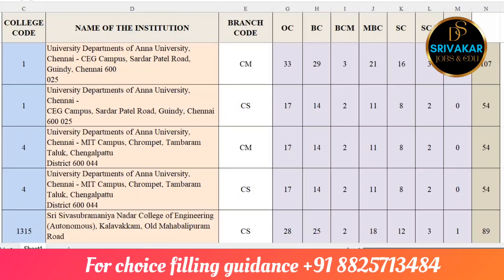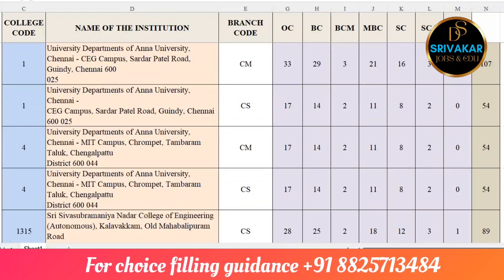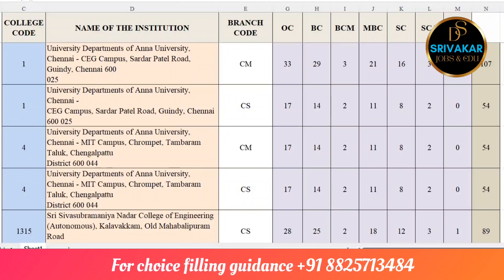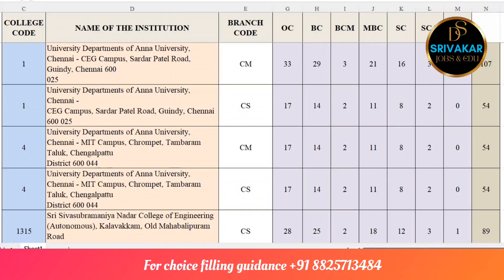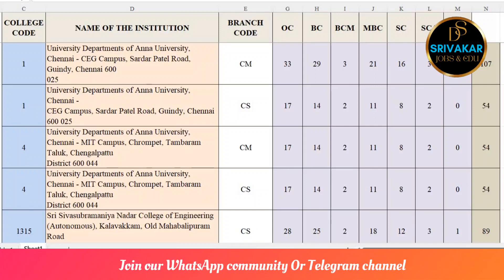On CEG campus, under self-supported and government quota: self-supported has 7 seats, government quota has 54 seats. OC is 33, BC is 29, BCM is 3, MBC is 21, SC is 16, SCA is 3, ST is 2.